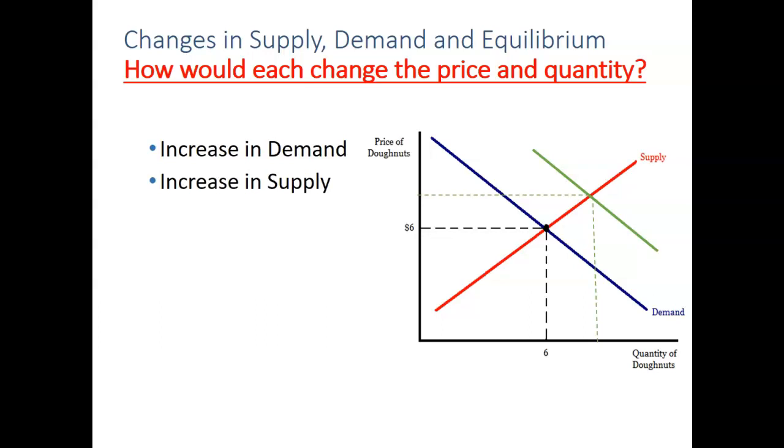What if the supply increases? Okay, it's going to shift the supply curve to the right, increases right, decreases shift to the left. So based on that, we're looking at the orange. So the price of the market has decreased. The quantity has increased compared to the original equilibrium of six.